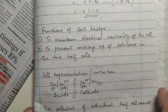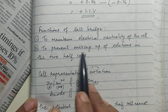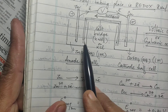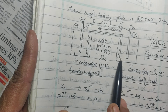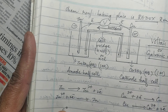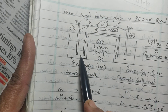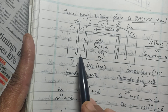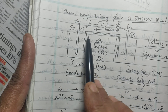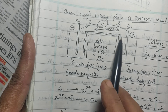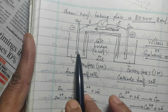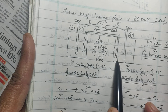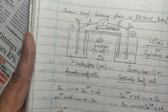The two functions of the salt bridge are: (1) to maintain electrical neutrality of the cell, and (2) to prevent mixing of solutions in the two half cells — zinc sulfate will not move to the copper cell, nor copper sulfate to the zinc cell. This prevention occurs because NO₃⁻ moves toward excess Zn²⁺, and K⁺ cannot enter that side due to repulsion; similarly, K⁺ moves toward the copper side because of Cu²⁺ deficiency. Thus mixing of solutions is not possible.